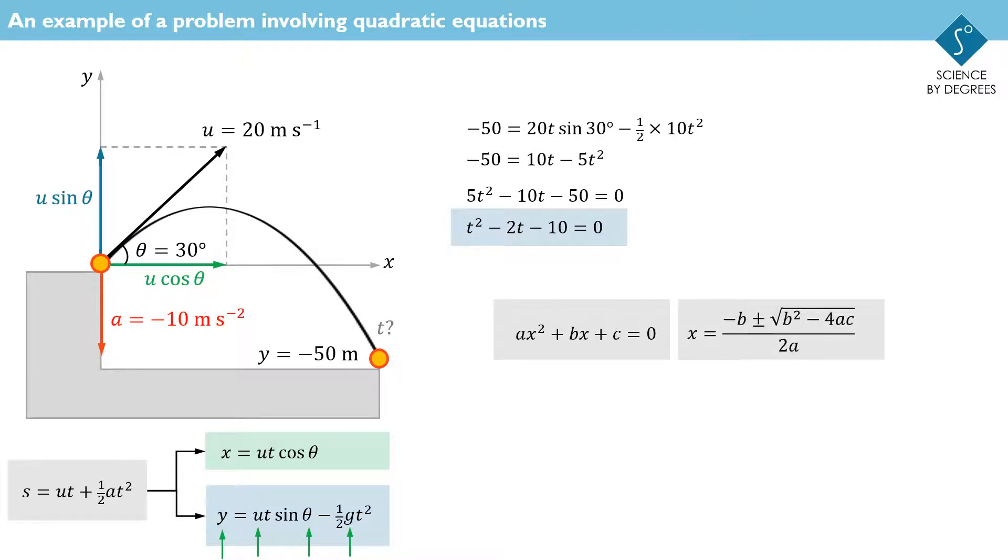All we need to do is substitute into the formula the values a equals 1, b equals negative 2, and c equals negative 10. Here it is. The bit inside the square root is 4 minus negative 40, which is 44. And so here we have the solutions for t.